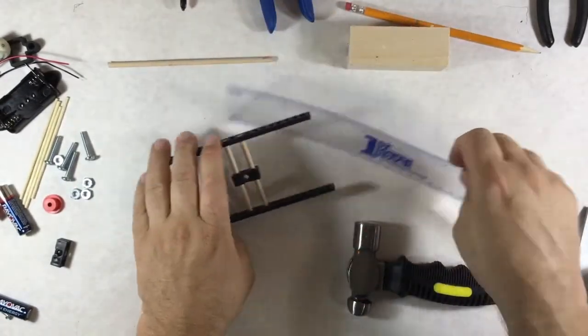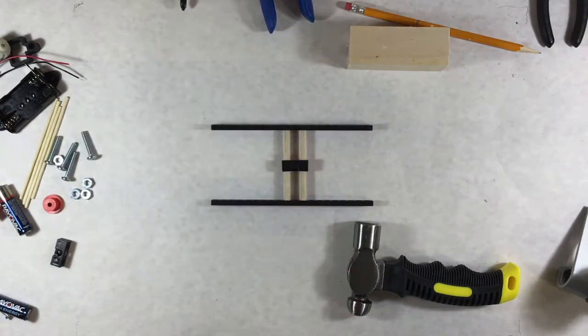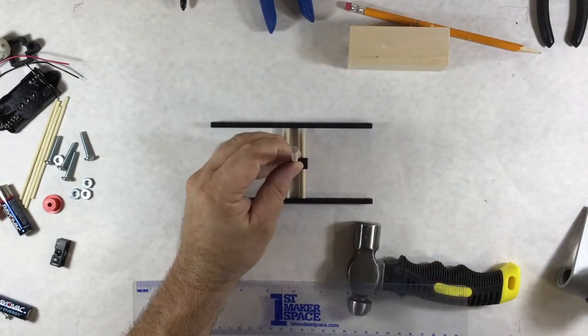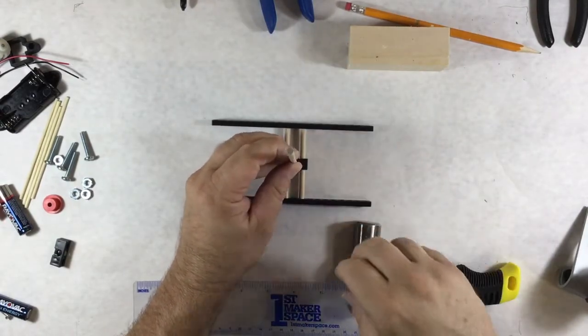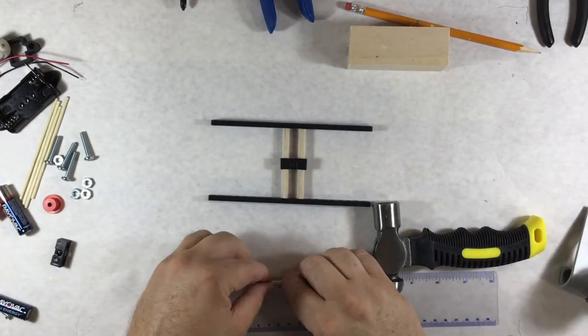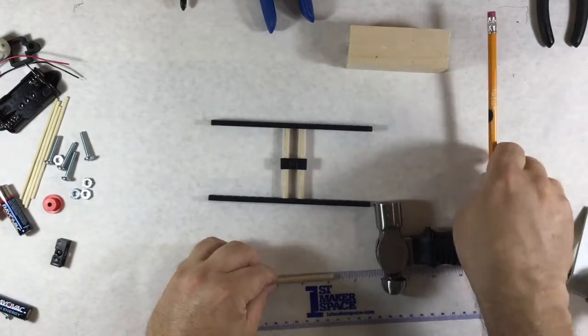Now I need another piece of dowel rod. They want this to be about 10 centimeters or four inches. This is going to go here. It's going to be where the prop goes. So again, that's another variable you could play with. How high that goes matters because of the length of the propellers.